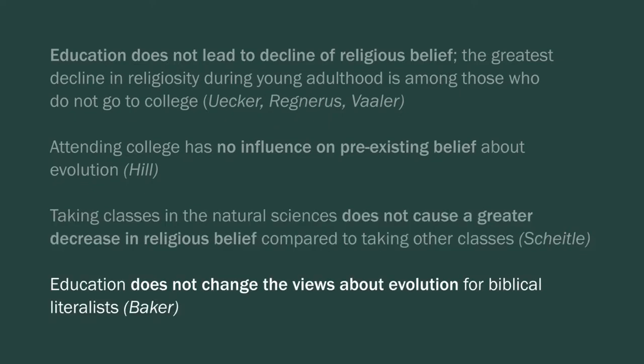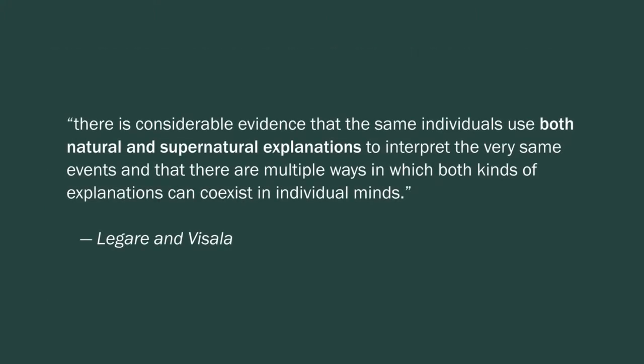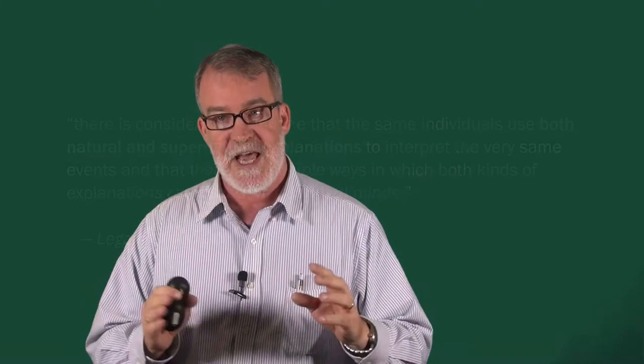Or social psychologists, for example, have conducted experiments and conclude that people have no problem holding seemingly contradictory beliefs like evolution occurred naturally and evolution was caused by God. These social psychologists conclude that there is considerable evidence that the same individuals use both a natural and a supernatural explanation to interpret the very same events, that there are multiple ways in which both kinds of explanations can coexist in individual minds. So if there was a conflict between holding any scientific claim in religion, then being religious should make a person likely to avoid all of science, but that's not what we find. Social science conclusion is that there are no religious groups that are in systemic conflict with science.